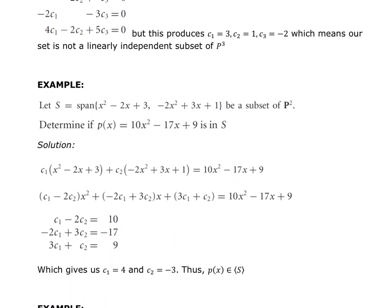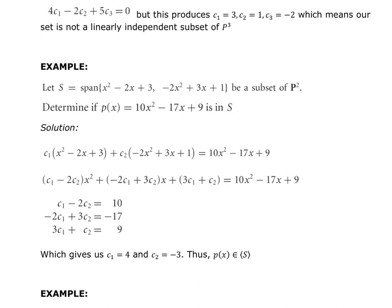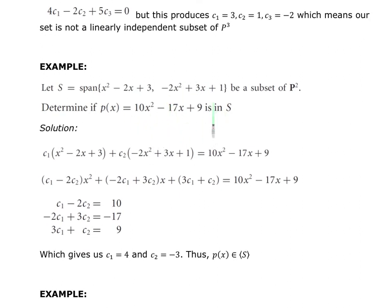For the next example, instead of checking linear independence, we want to determine whether a given polynomial is within the span of a spanning set S, working in polynomials of degree two. The key difference is that instead of setting the linear combination equal to zero, we set it equal to the target polynomial we're testing. So C1 times the first polynomial plus C2 times the second polynomial equals the target polynomial.